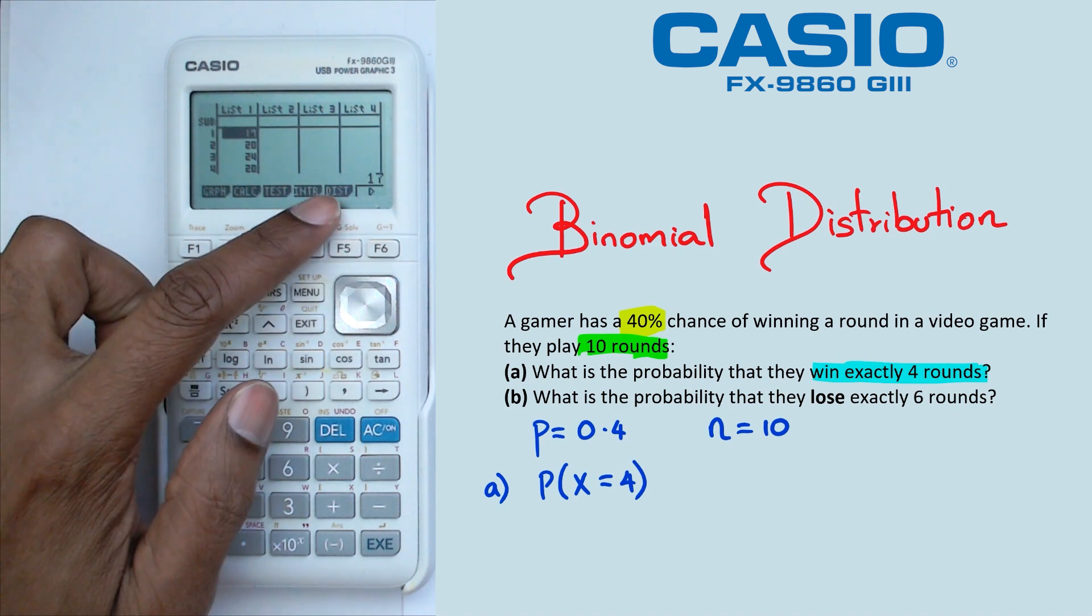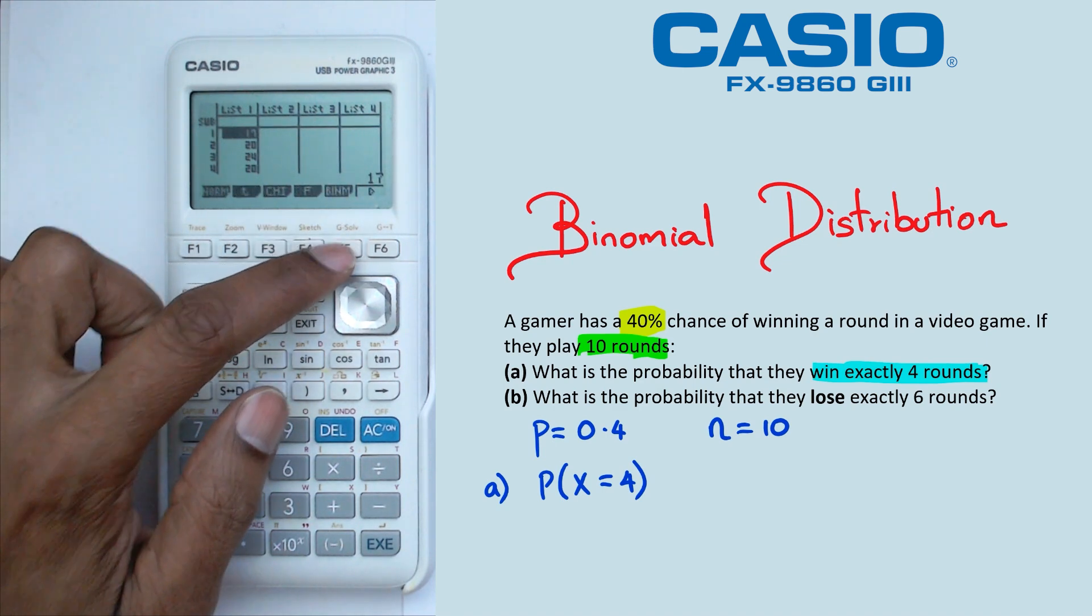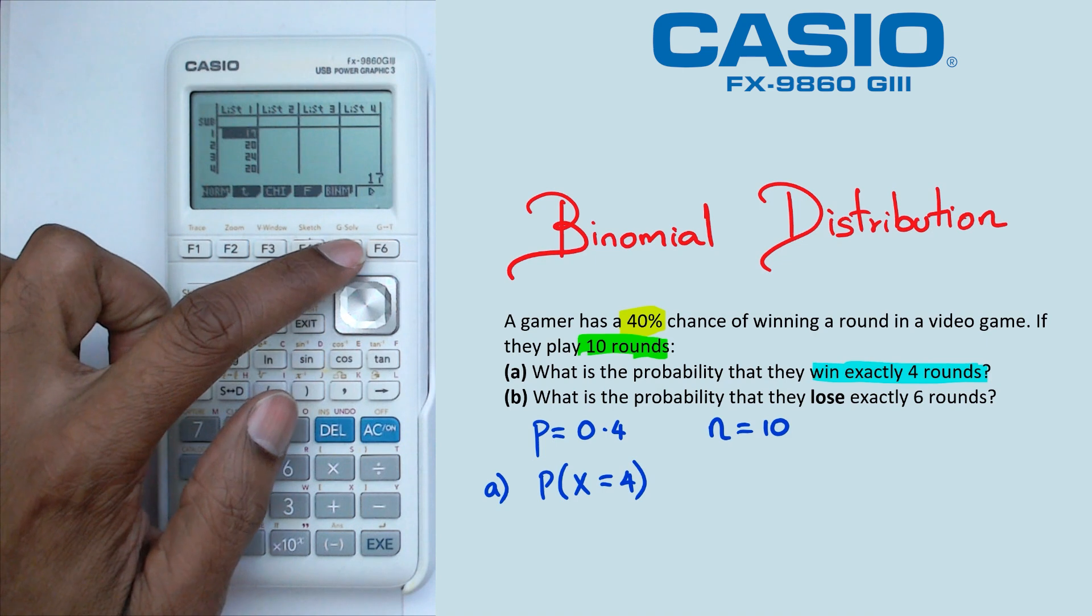We're going to click on distribution, which is F5. Then we're going to click on binomial, which is also F5.